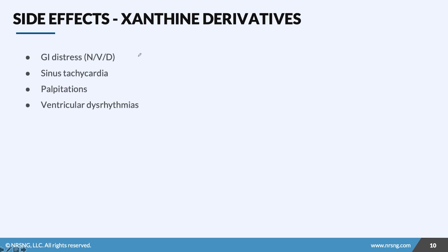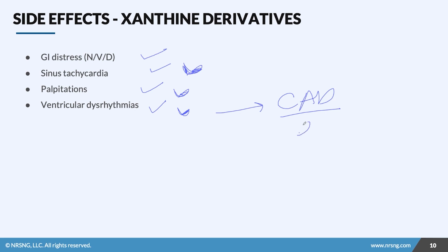With xanthine derivatives, side effects are all over the place because the vasoconstriction is systemic. We have nausea, vomiting, diarrhea, cardiac side effects, palpitations, and ventricular dysrhythmias. If you have a patient with a history of V-fib or V-tach, you might exacerbate or potentiate that. If you have a patient with severe coronary artery disease or pre-existing dysrhythmias, this drug class might not be for them — you may have to go back to anticholinergics and beta agonists. We're trying to help their airway without causing them to go into V-fib or V-tach.